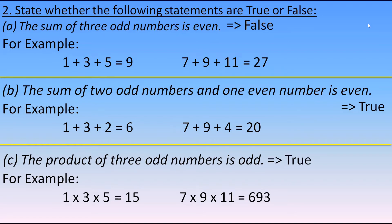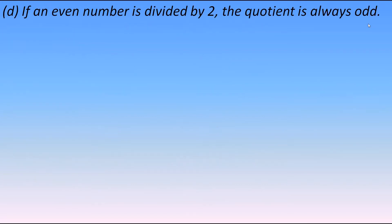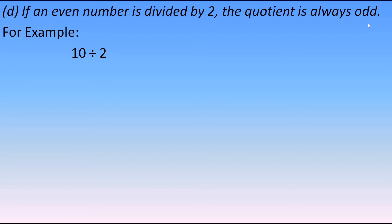Next statement: if an even number is divided by 2, the quotient is always odd. Taking 10 divided by 2 gives 5, which is odd. But 8 divided by 2 gives 4, which is even. So the quotient may be odd or even — it is not always odd. Therefore this statement is false.